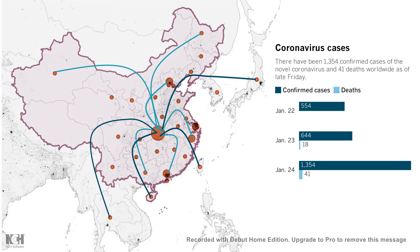According to Johns Hopkins University, there were 1,354 confirmed cases and at least 41 deaths reported till January 24th. It's pretty deadly, but not as deadly as the Ebola virus. Coronaviruses are not so lethal, but sometimes they can be quite nasty.